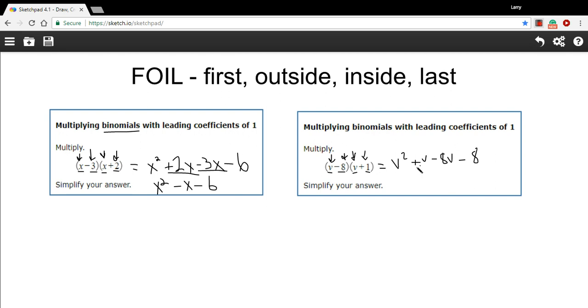Now we've got some like terms to combine here. The positive 1v and the negative 8v. That's going to be a negative 7v. And we've got our v squared and our negative 8. So that's a little bit of work with multiplying binomials using the FOIL method.